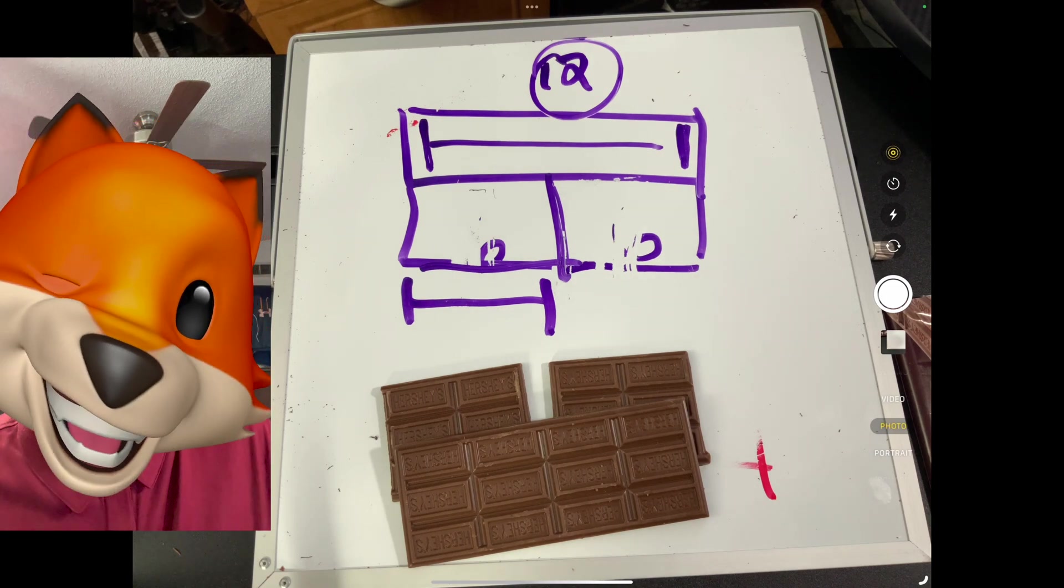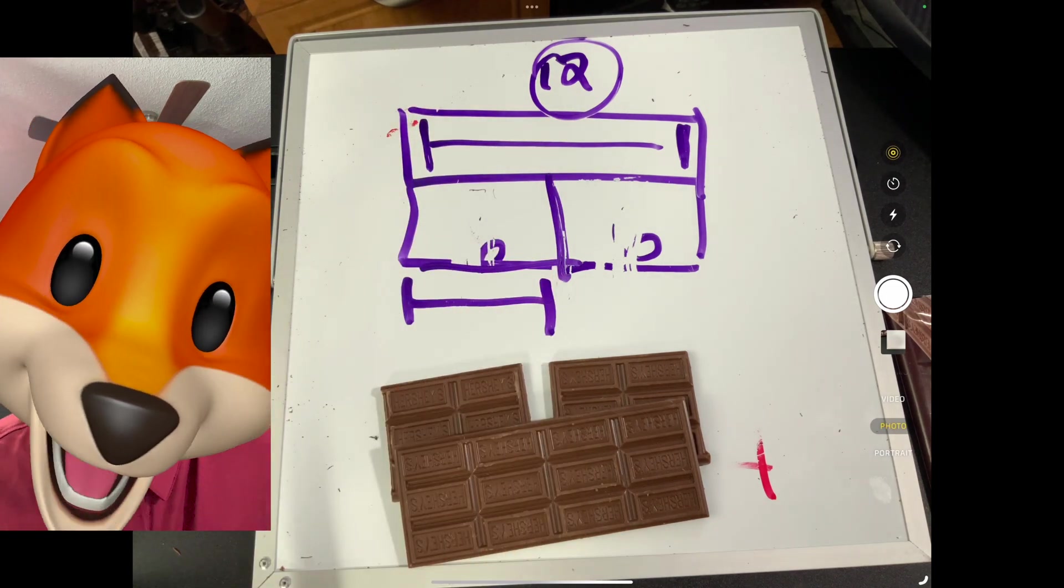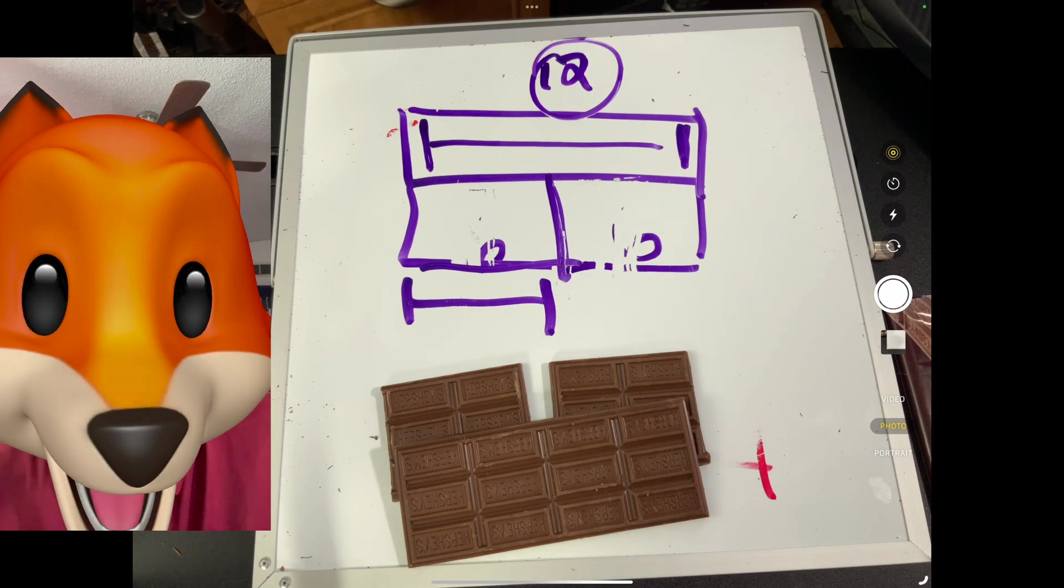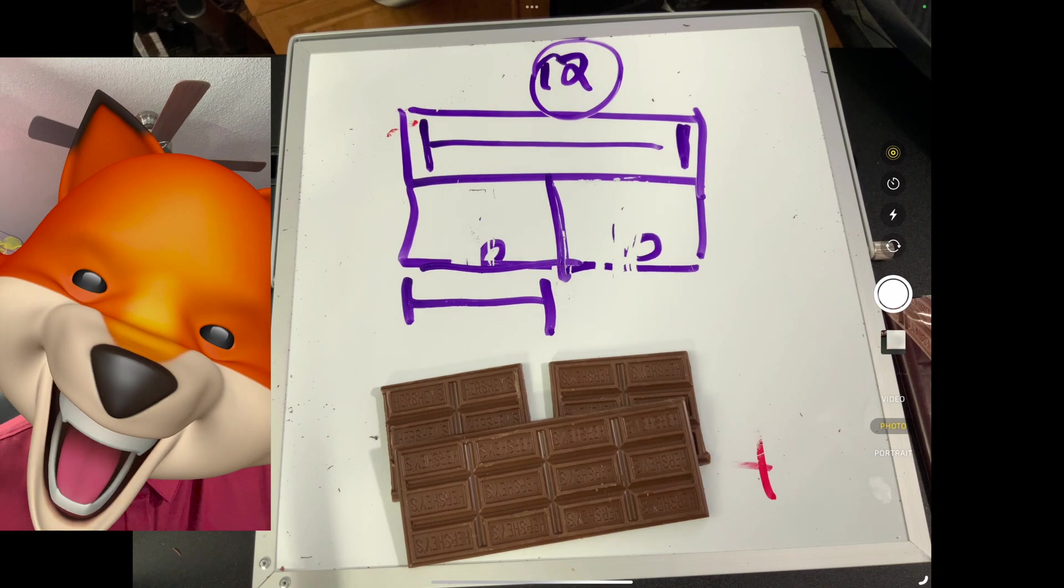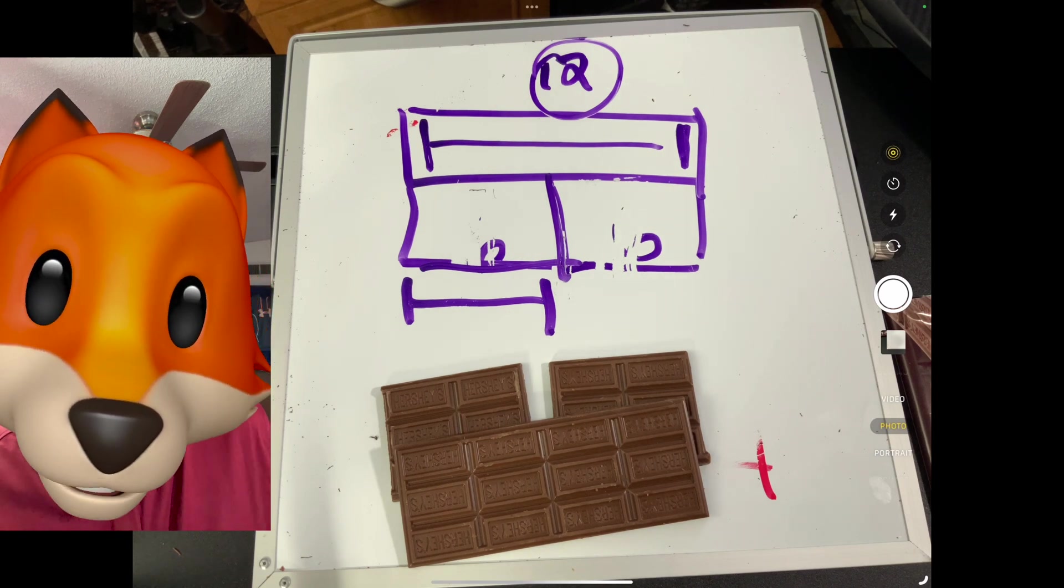If you have a total and a missing part, well, if you take that part out, whatever's left, that has to be the missing part. All right, my friends. I'm going to eat some chocolate. Have a wonderful evening. Bye.